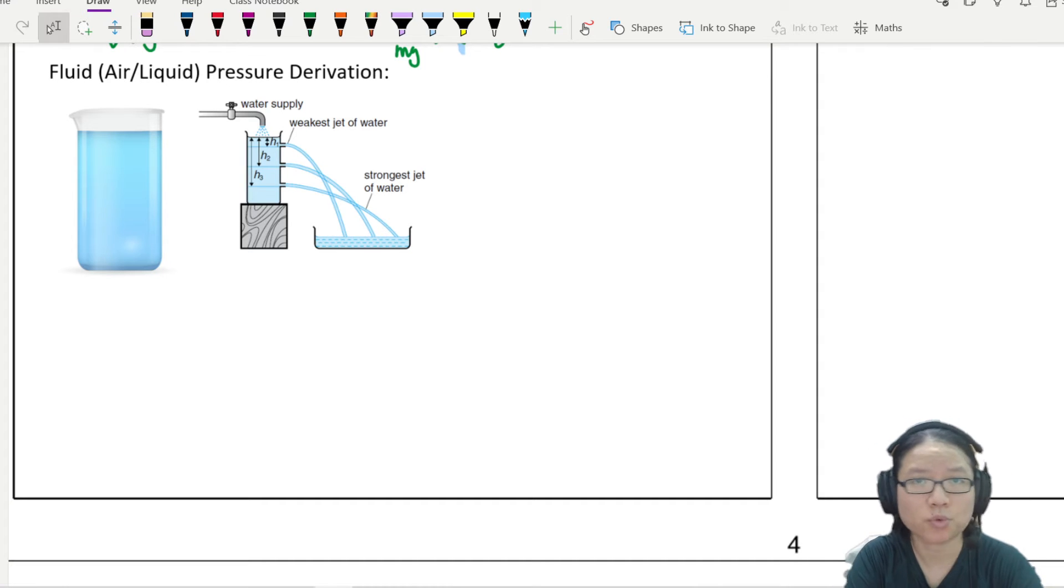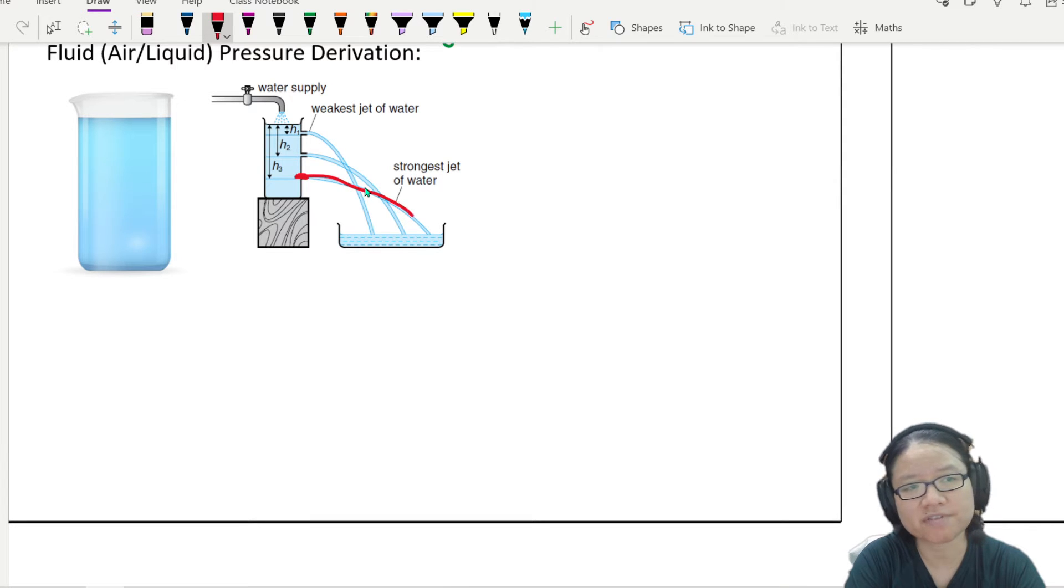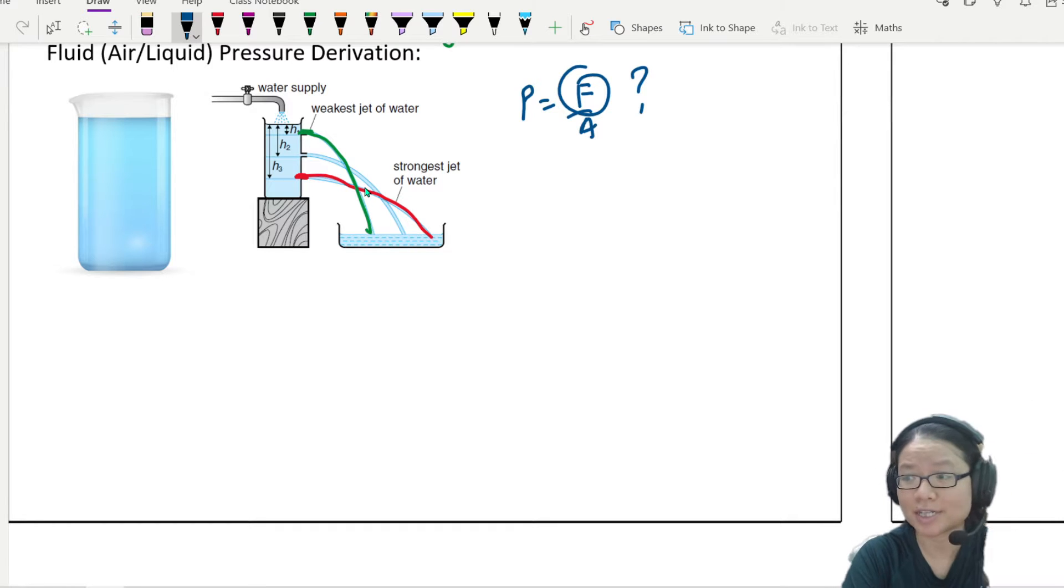So in the previous video, where we looked at the idea of pressure being force per unit area, we also looked at a case where right now we have a fluid, maybe it's water. And right now you will see that the water that comes from the lowest part will travel the furthest.